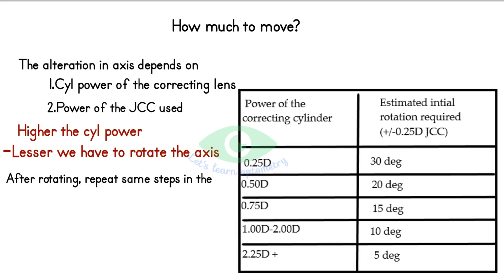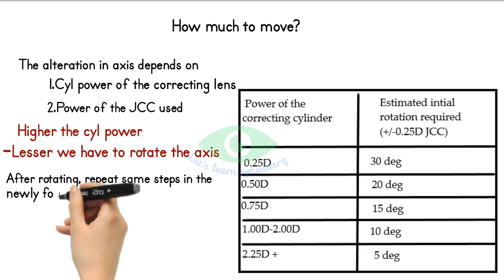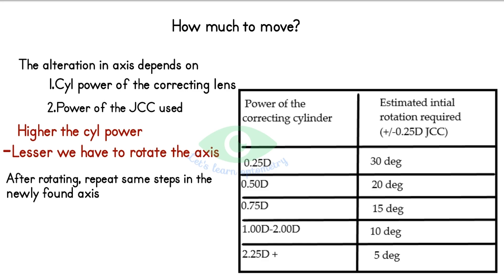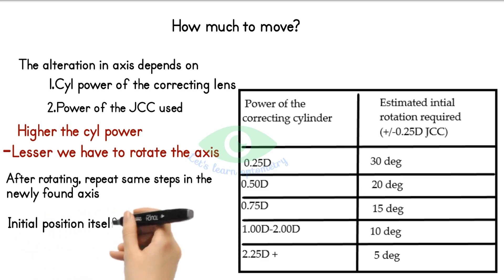After rotating the cylindrical lens to a new axis, place the handle of the JCC at the newly found axis and repeat the same steps until the patient says both positions look equal. If the patient says there is no difference between the two positions at the very beginning, do not conclude that you are on the correct axis. Confirm by rotating the lens slightly away from the initial position and check whether the patient prefers the initial axis.